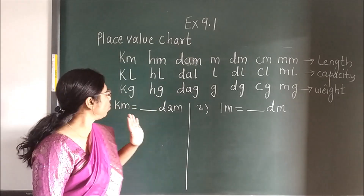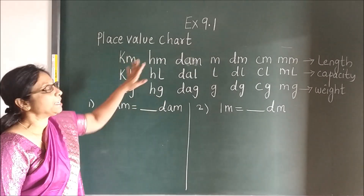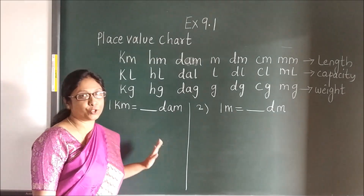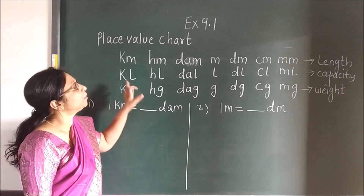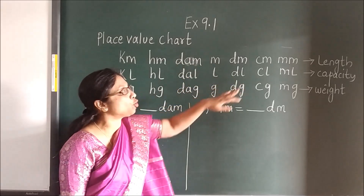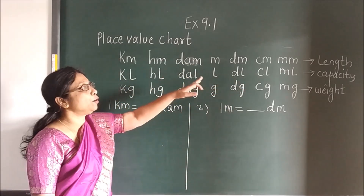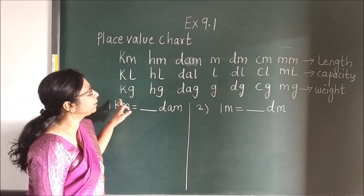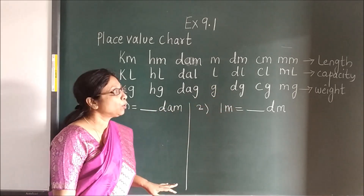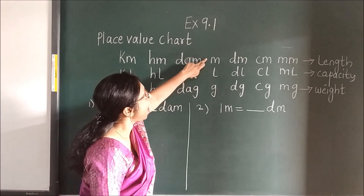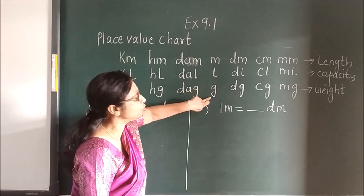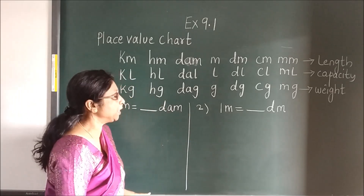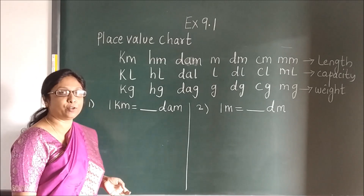Again, exercise 9.1. Here is the place value chart. Using this place value chart, children, you have to solve the conversion. The first line shows the place value for length, the second line for capacity, and the third shows for weight. You can see M, L, and G — these are the standard units of measurement. Using this we will do the conversion.